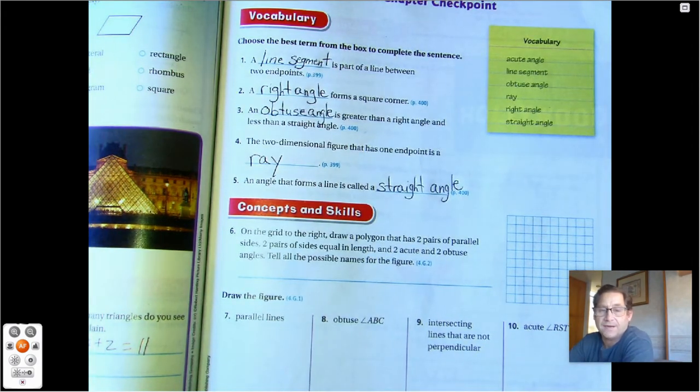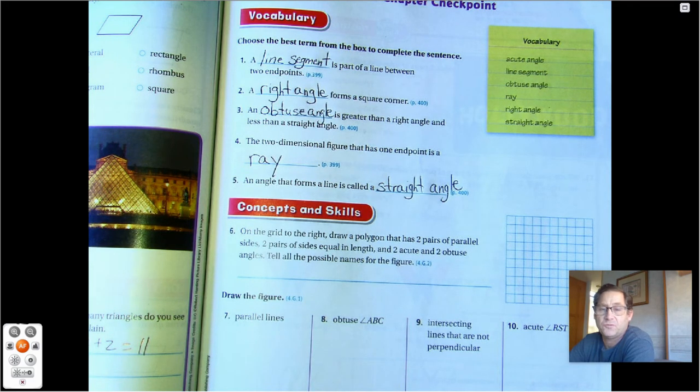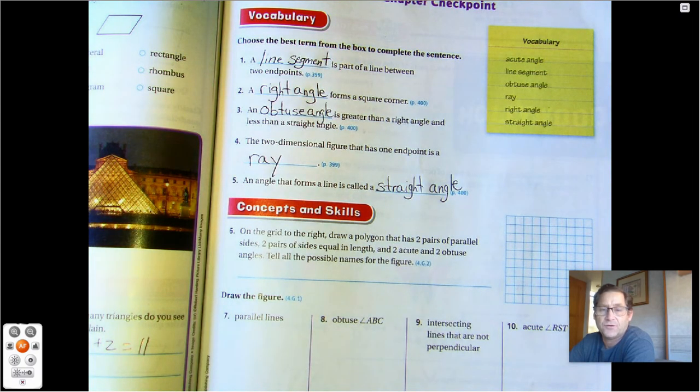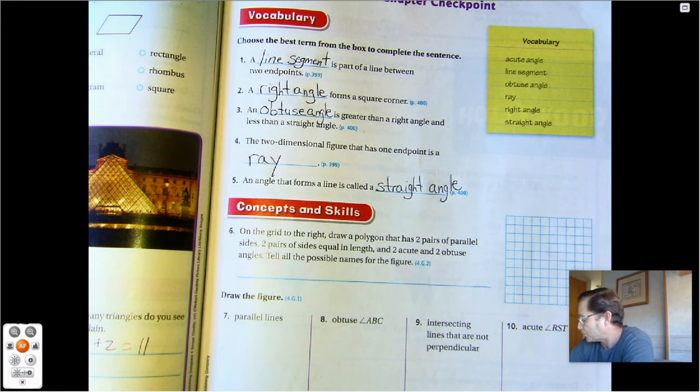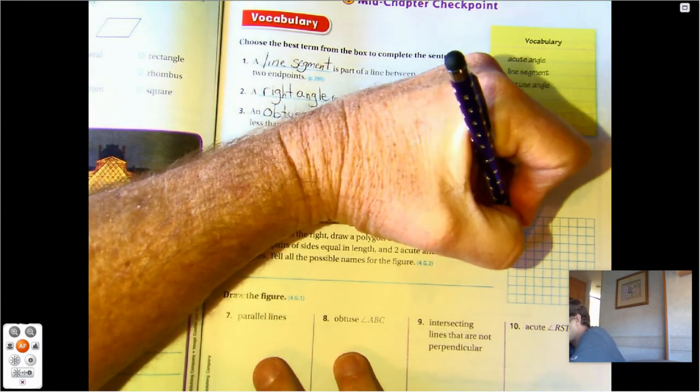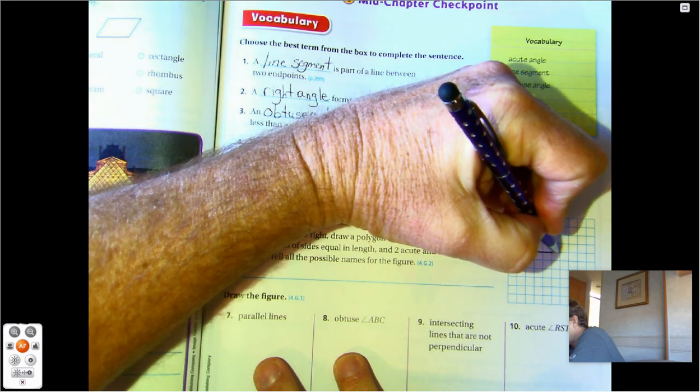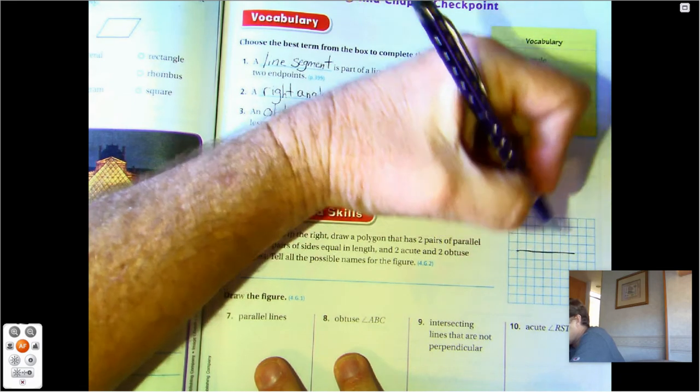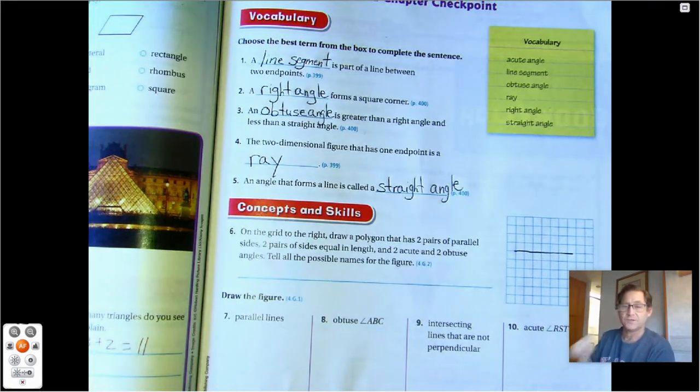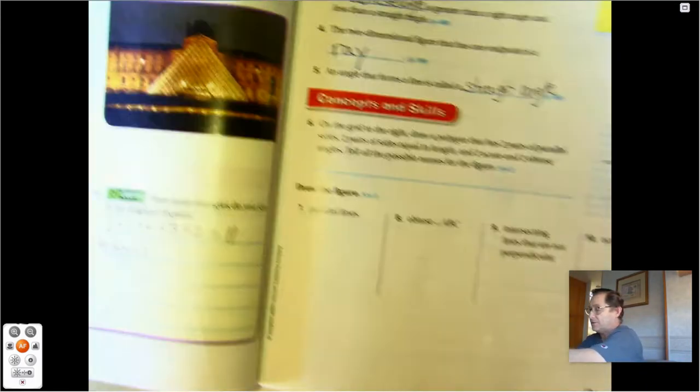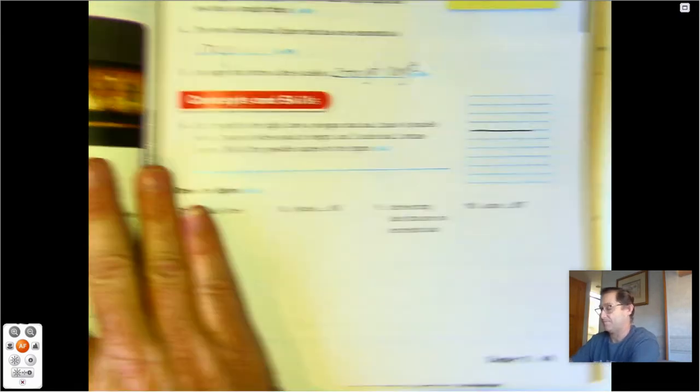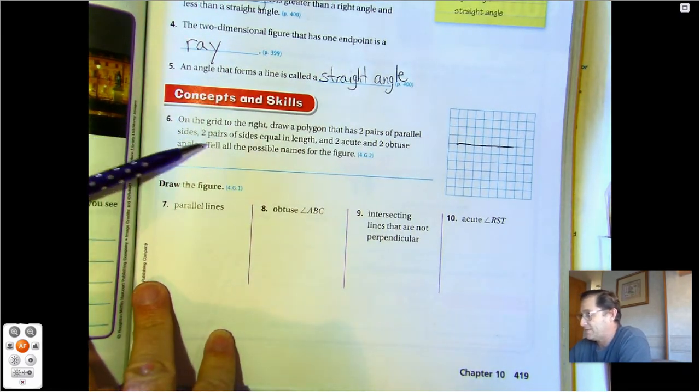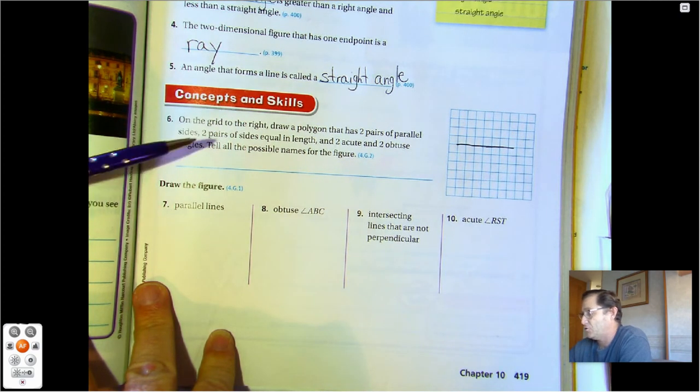On the grid to the right, draw a polygon that has two pairs of parallel sides, two pairs of sides equal in length, and two acute and two obtuse angles. Tell all the possible names for the figure. We're looking for something like a parallelogram because that would have two pairs of parallel sides, two pairs of equal sides, and two acute and two obtuse angles.